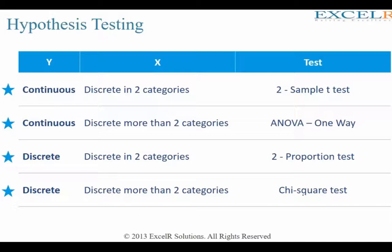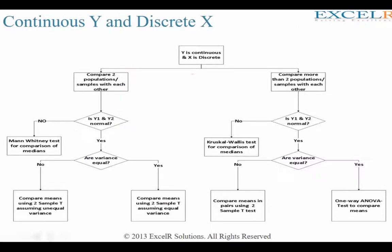We will be frequently revisiting this particular slide. And one more thing — whenever Y is continuous and X is discrete, we tend to always refer to this particular flowchart. I am going to explain all of these things.